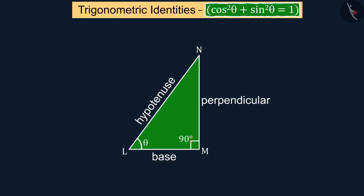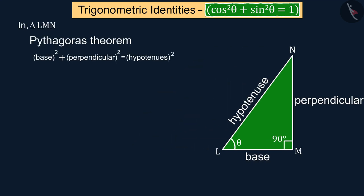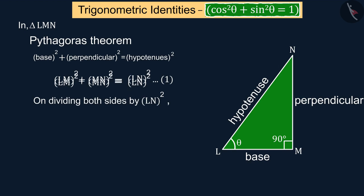Let's suppose triangle LMN is a right-angled triangle. If we use Pythagoras theorem in this triangle, then we can see here we get the square of LM plus square of MN is equal to the square of LN, which is represented by equation 1. And each term of equation 1 is divided by the square of LN.